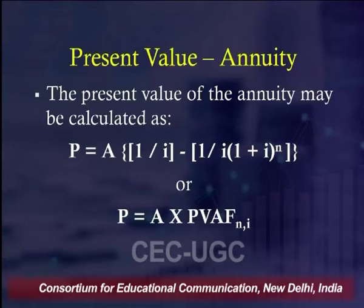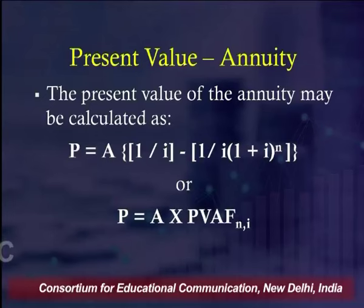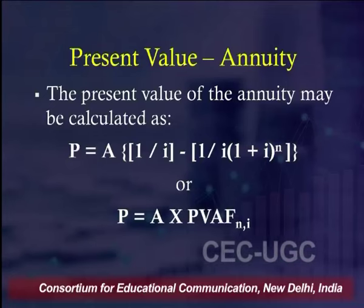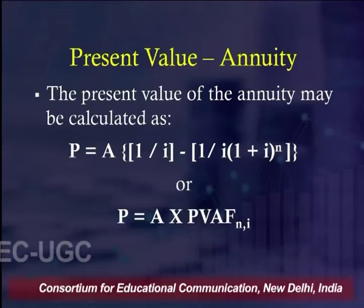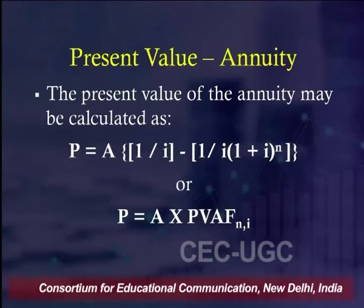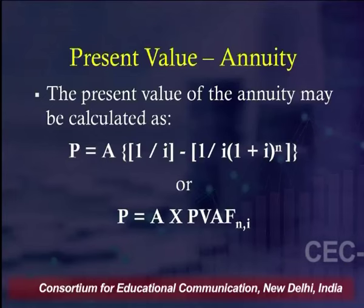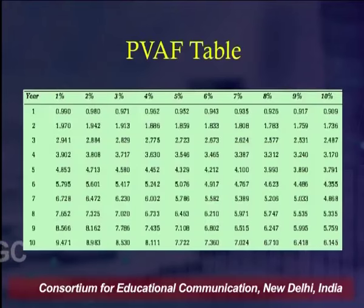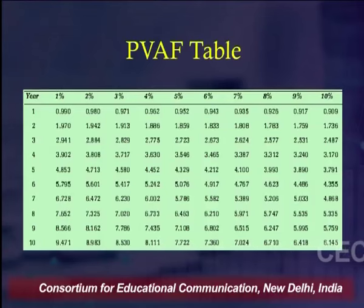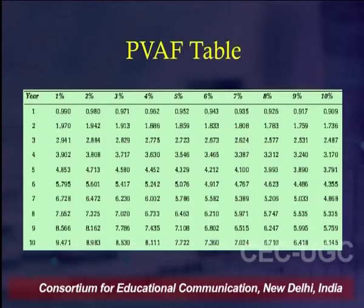Just as we calculated the future value of annuity, we can also calculate the present value of annuity when the same amount is received year after year. The formula is: P = Annuity × PVAF, where PVAF is the Present Value Annuity Factor. We use a fourth type of table — the PVAF table — where years and percentages are given, and we find the intersection value.